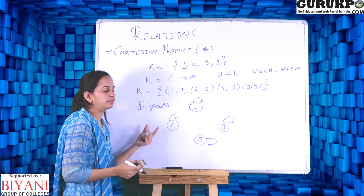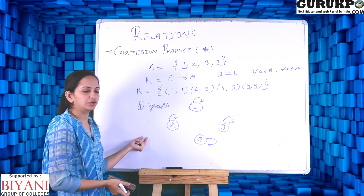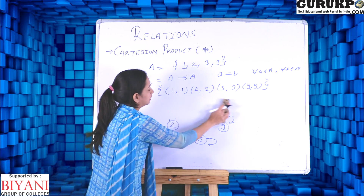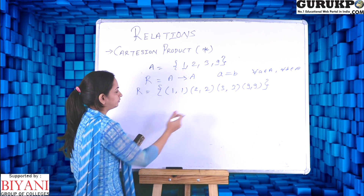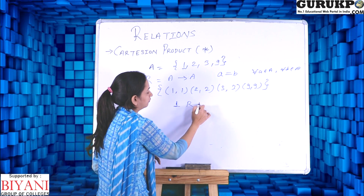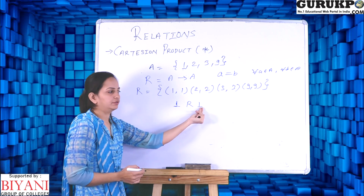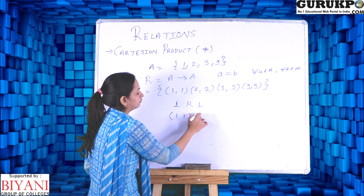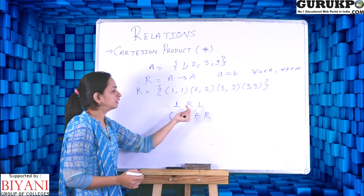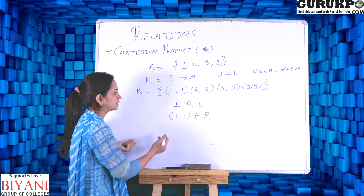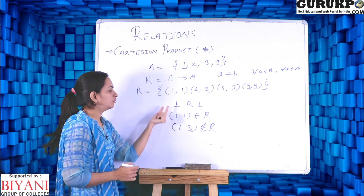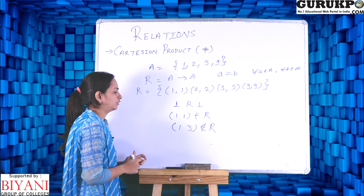So we have discussed four ways to represent a relation: first is set notation, second is pictorial form, third is matrix form, and the fourth is digraph form. You can represent the relation in any one of them. Also note that if 1 is related to 1 we write 1R1, or equivalently (1,1) ∈ R. If a pair is not in the relation, for example (1,3), we write (1,3) ∉ R.